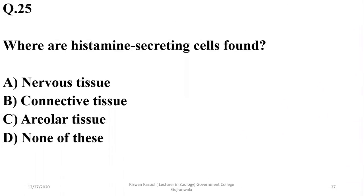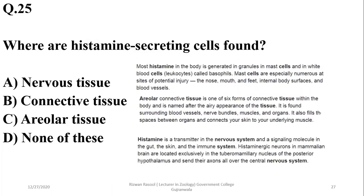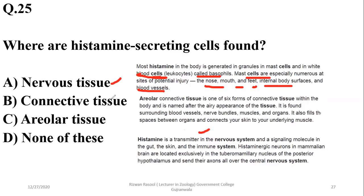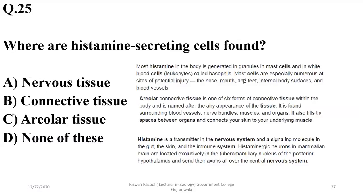Question 24: Where are histamine-secreting cells found? They are produced by connective tissue in the blood, as well as some nervous tissue. Histamine-producing cells are found in connective tissues such as basophils and mast cells, in the nose, mouth, internal body surfaces, and blood vessels. Areolar tissue is also a connective tissue. In my opinion, the answer should be 'all of these' — options A, B and C — as histamine is produced across these locations.